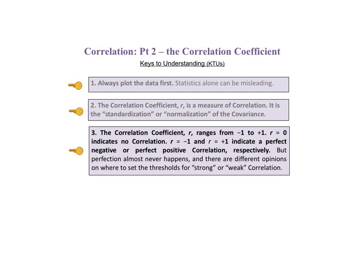But perfection almost never happens, and there are different opinions on where to define the threshold values of r for strong or weak correlation.